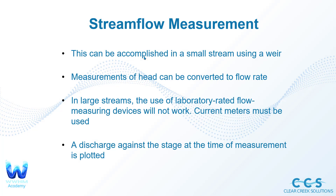This can be accomplished in a small stream using just a weir. Measurements of head — the water head — can then be converted into flow rate. In large streams, the use of laboratory rated flow measuring devices will not work, so current meters must be used to measure the discharge in that stream. Discharge against the stage at the time of measurement will be plotted for the stage discharge curves and then later converted into rating curves.